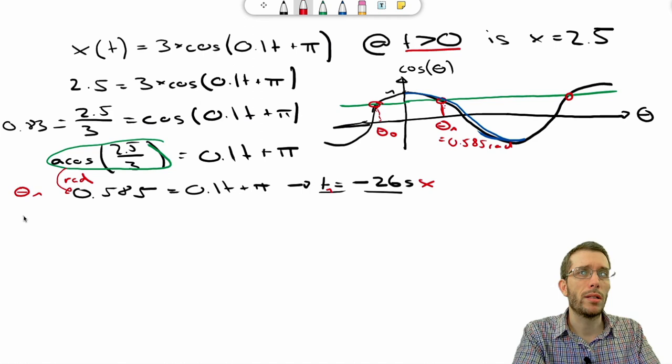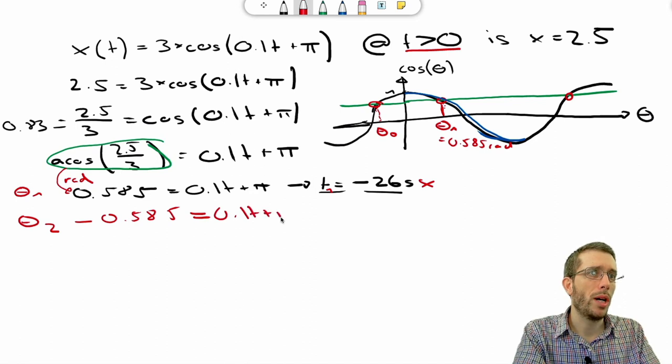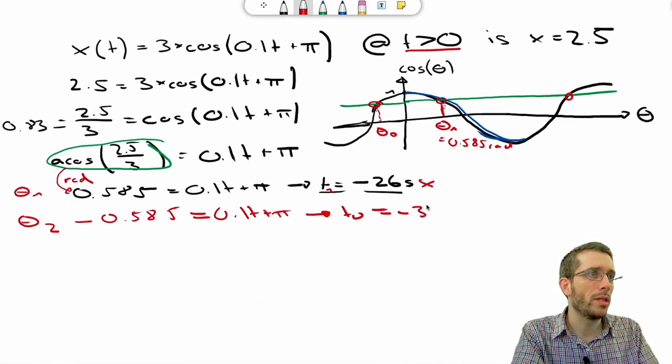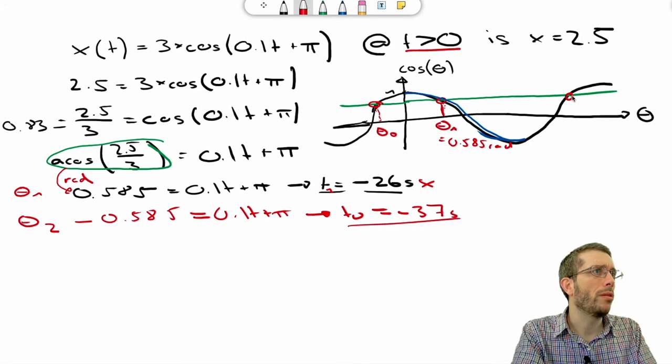Then I had θ0, which is the same number but negative, minus 0.585 equals to 0.1t plus pi, and then I will get a t0, which is equal to, what will I get, minus 37 seconds. That's even worse than my first one. I even get more negative. So what about that one here?